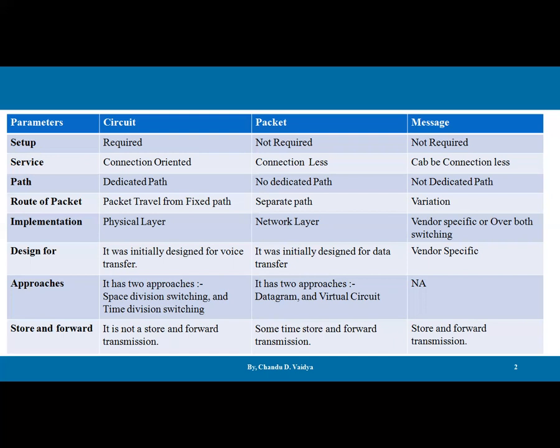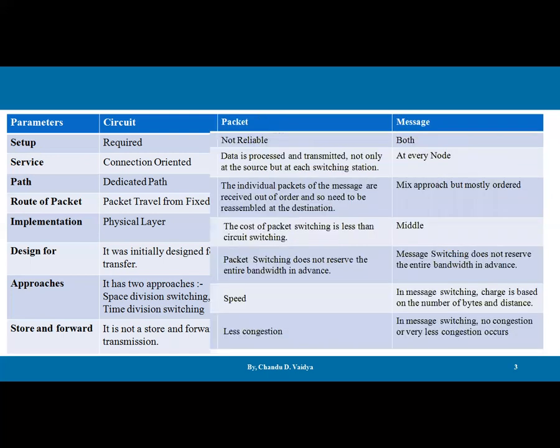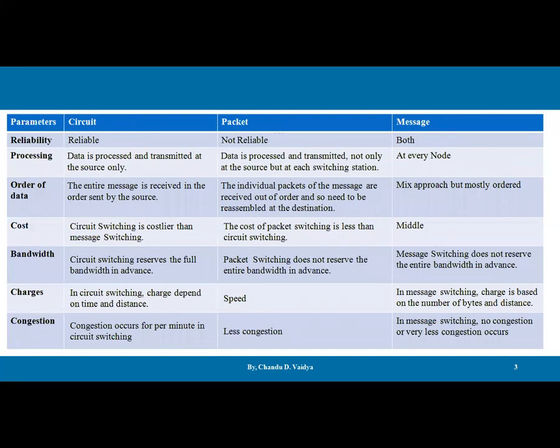Store and forward: circuit switching is not a store-and-forward transmission. Whereas packet switching sometimes uses store and forward. But message switching is store and forward only. On the basis of reliability: circuit switching is reliable, as a dedicated path is available, so reliability is more. Packet switching has no guaranteed reliability, but people trust it because of the fast service. Message switching can be both reliable and unreliable.